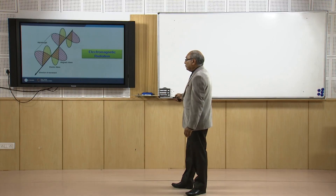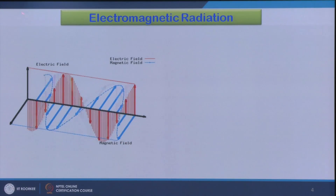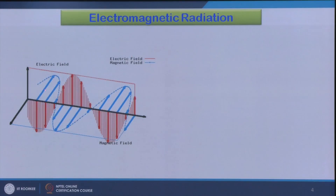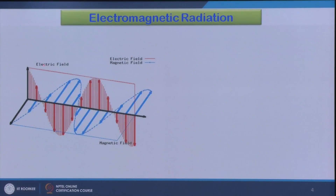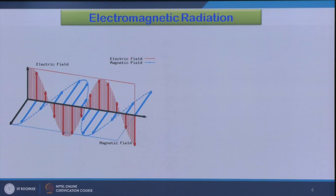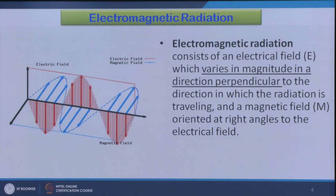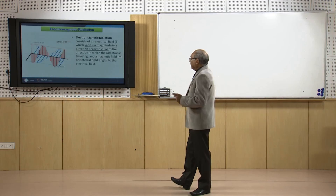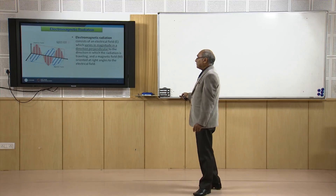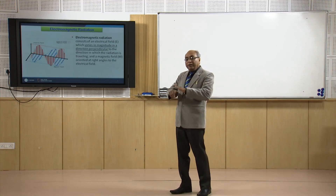The distance between two peaks is the wavelength. In a simulation, we can show how the electric and magnetic fields have this relationship and how they travel. The magnetic field and electric field — two types of electromagnetic waves — are travelling, and this is the direction of propagation. Electromagnetic radiation consists of an electrical field E which varies in magnitude perpendicular to the direction the radiation is travelling, and a magnetic field M oriented at right angles to the electrical field.